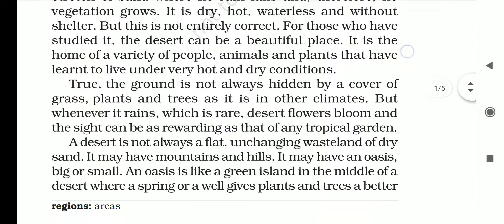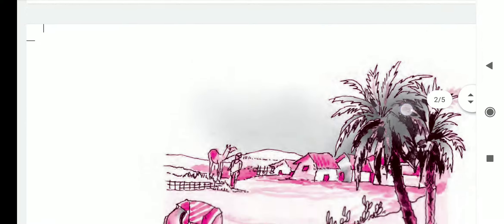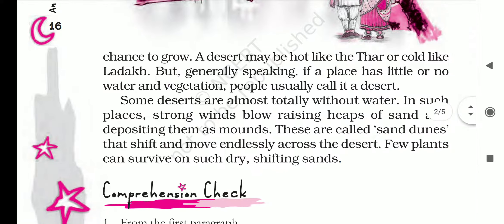A desert is not always a flat, unchanging wasteland of dry sand. It may have mountains and hills. It may have an oasis, big or small. An oasis is like a green island in the middle of a desert where a spring or a well gives plants and trees a better chance to grow. A desert may be hot like Thar or cold like Ladakh, but generally speaking, if a place has little or no water or vegetation, people usually call it a desert.